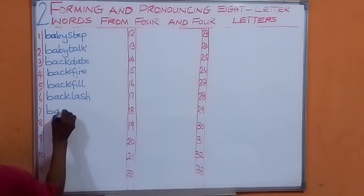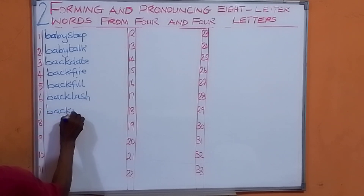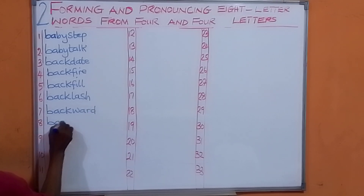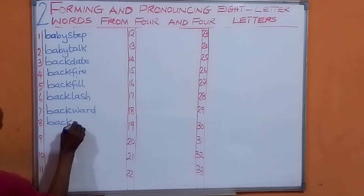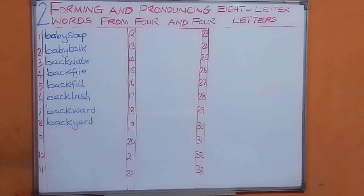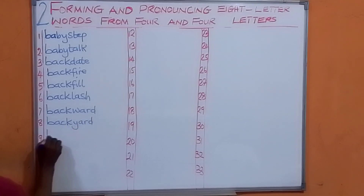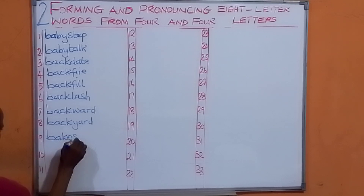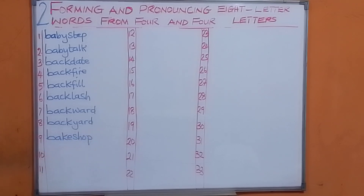Let's have back and word. We have backword. Let's take back and yard. We have backyard. Let's have big and short. We have bigshort.